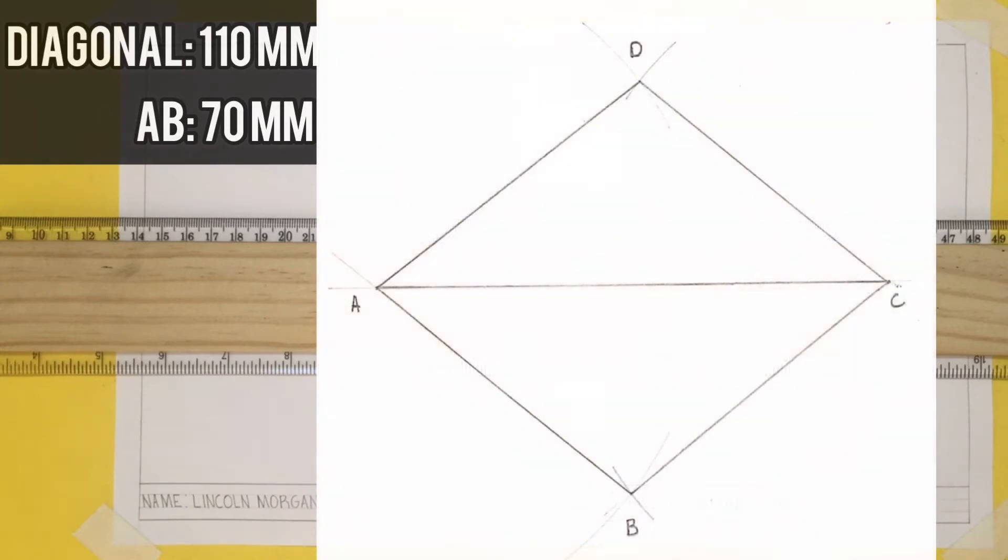I will now go ahead and draw my diagonal. My diagonal today will be 11 centimeters or 110 millimeters, and the length of the given side is 7 centimeters or 70 millimeters.